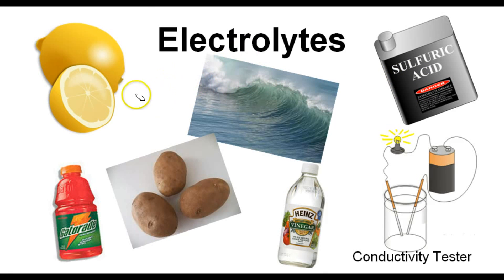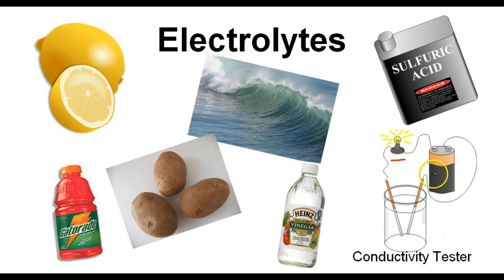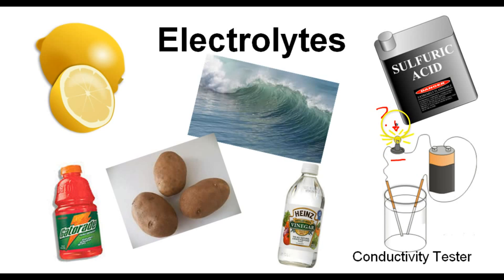They are substances that can conduct an electric current. Suppose I have a little conductivity tester here, which consists of some copper wire hooked up to these electrodes, which is also hooked up to this little light bulb. If I take these electrodes and stick them in this lemon, the light bulb is going to light up because the citric acid in this substance is electrolytic — it conducts an electric current.